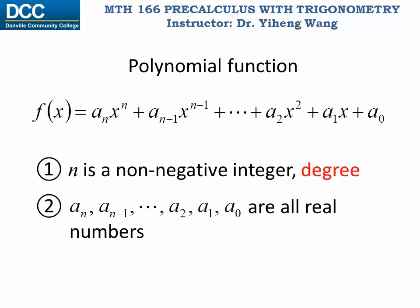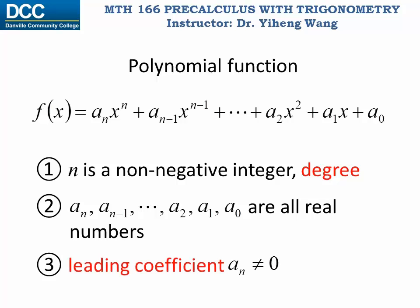a_n, a_{n-1}, etc. are all coefficients, and they are all real numbers. They simply mean that a_n is the coefficient associated with the term x to the nth power, and a_2 is the coefficient associated with x squared. Except for a_n, all other coefficients can be zero, so it is not unusual to see a polynomial function with missing terms. However, a_n — known as the leading coefficient — cannot be zero, because if a fifth degree polynomial had a leading coefficient of zero, it would be called a fourth degree polynomial instead.